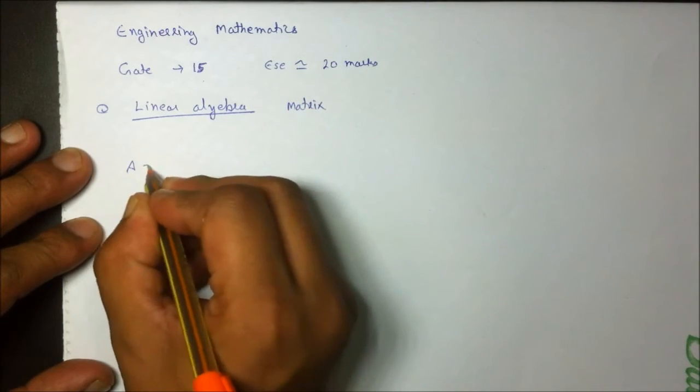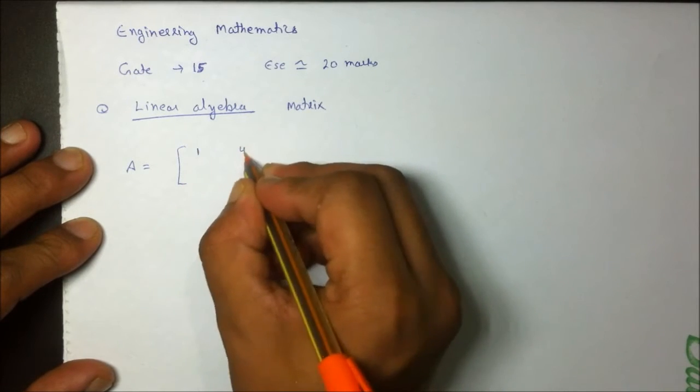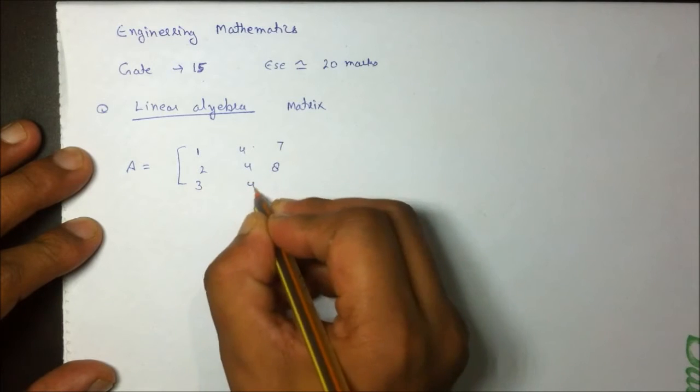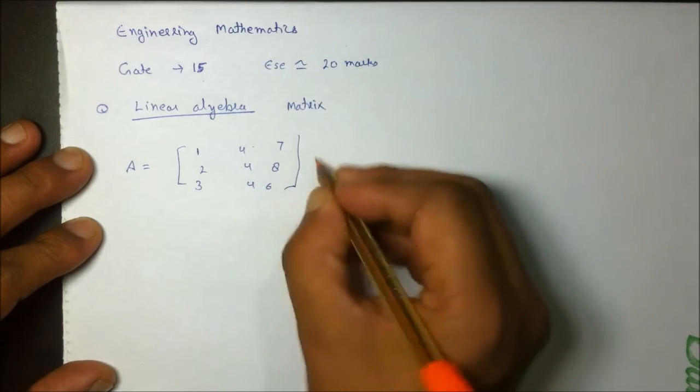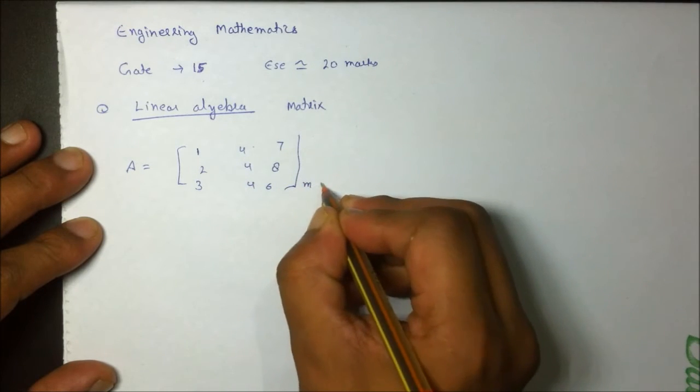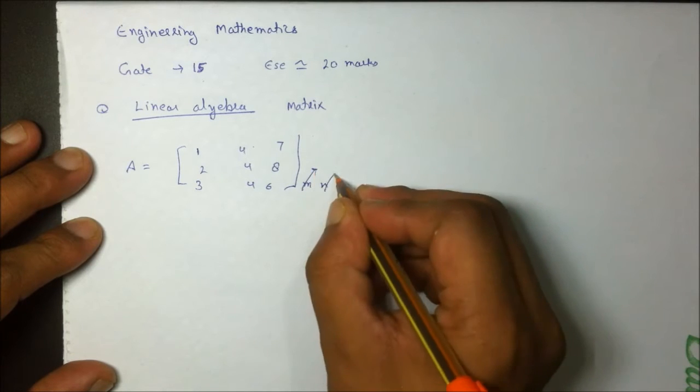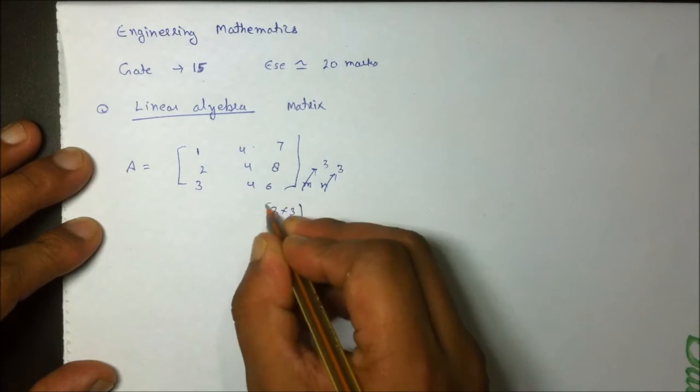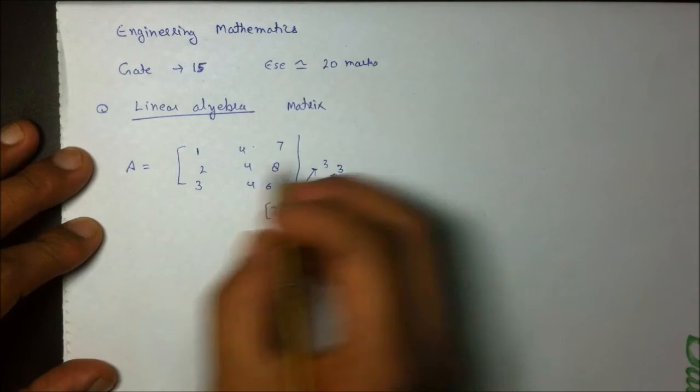The matrix is denoted by a rectangular array: 1, 1, 4, 7, 2, 4, 8, and 3, 4, 6. This is a general example of a matrix having m rows and n columns. Here m and n are 3 and 3, so it is a 3×3 matrix. This is the general notation of a square matrix.